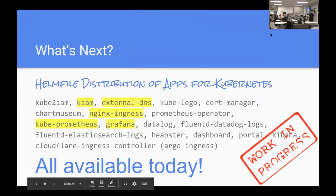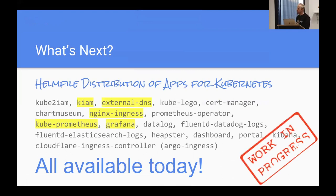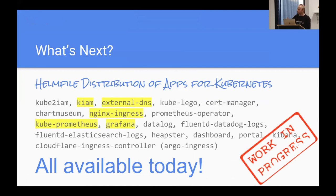Here's where I see this going from here: what we desperately need for Kubernetes is a distribution — something like Red Hat, something like SUSE — that is opinionated and deploys pre-configured Helm charts for a given cluster. Our distribution works well with KOPS on AWS. It ships with all the essential pieces for running a production cluster: things like KIAM for AWS assumed roles, External DNS for dynamic DNS, Prometheus, Grafana, et cetera.